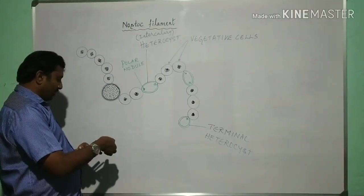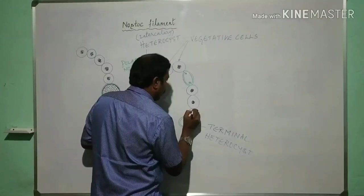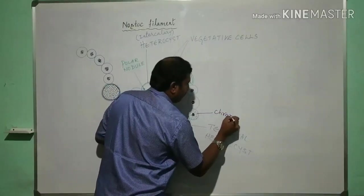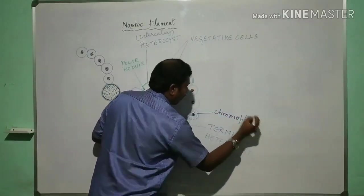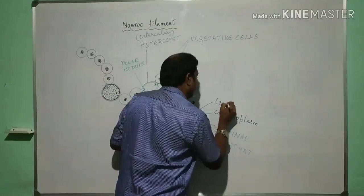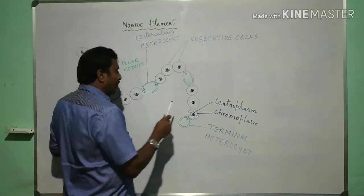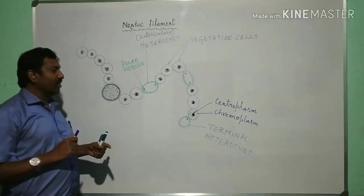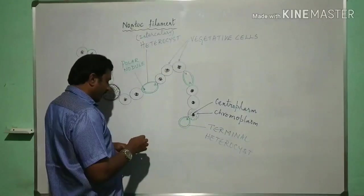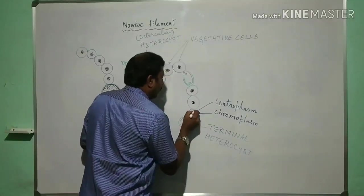Now the rest of the cells can show the chromoplasm. Each vegetative cell consists of peripheral chromoplasm and the central nucleic region which is with the primitive nucleus called centroplasm. So the cytoplasm within the vegetative cells includes central centroplasm peripheral, surrounding the coloured pigments are present, so we call this as chromoplasm.